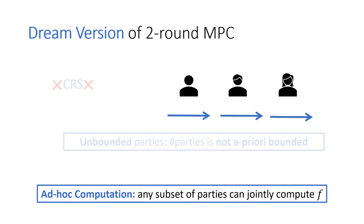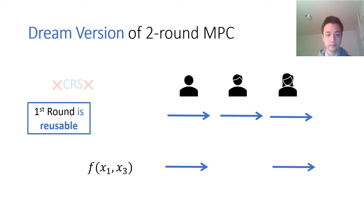For the second round message, it should satisfy the ad-hoc computation property. This requires that any subset of parties can join the computation. For example, if f is a function taking both x_1 and x_3, and the first party holds x_1 and the third party holds x_3, then to jointly compute f, only the first and third parties need to be involved in the second round.